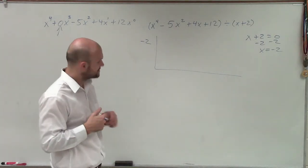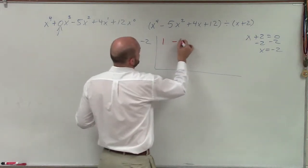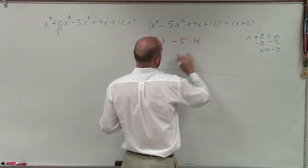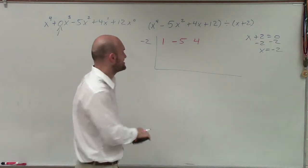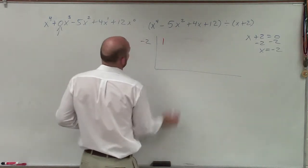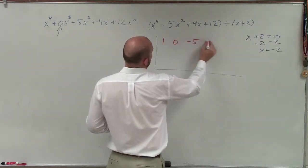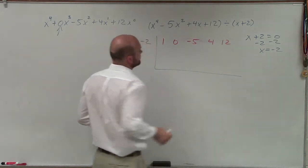Alright. So what I'm going to do is I'm just going to label the coefficients of 1, negative 5, 4, oh, I already went too fast, see, I'm starting to make the mistakes. Of 1, 0, negative 5, 4, and 12. Okay?